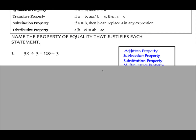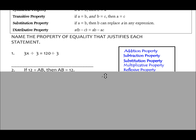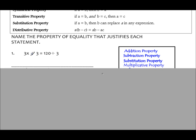The first way we're going to look at these examples is where we see one step, and we have to determine what that property is. Then later we'll add more than one step to the proof. For example: if you have 3x divided by 3 and 120 divided by 3, all we've done is divided both sides of the equation by the same number. So that's called the division property.